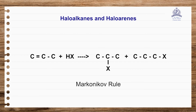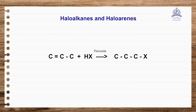Markovnikov's rule states that the halogen substitution will go to the carbon which has the fewer number of hydrogen atoms. So the halogen attaches to the second carbon — that product is major and the other is minor. If you use a peroxide, however, the anti-Markovnikov product is preferred — this is called the anti-Markovnikov rule or Kharasch effect — and halogen substitution goes to the terminal carbon.